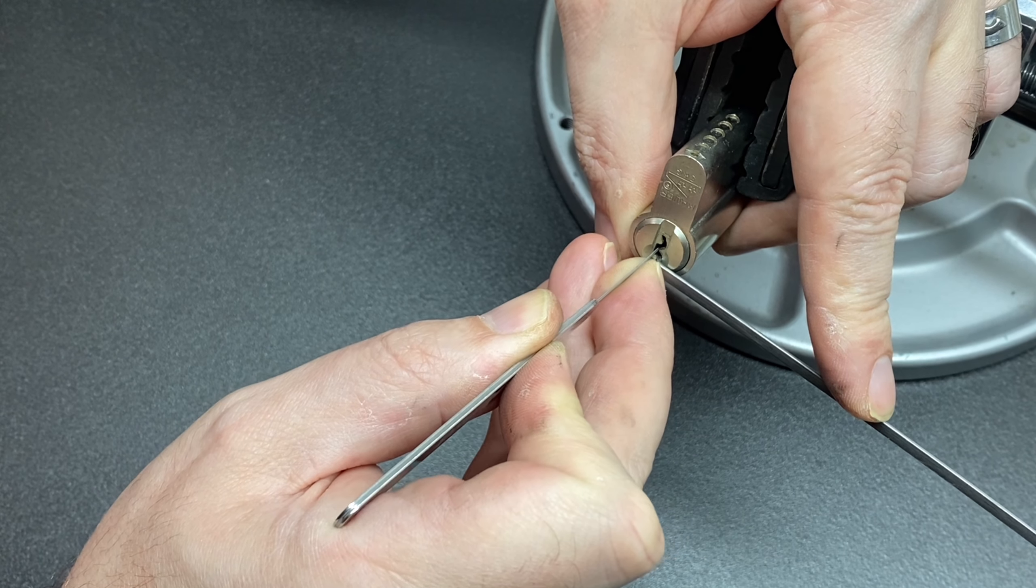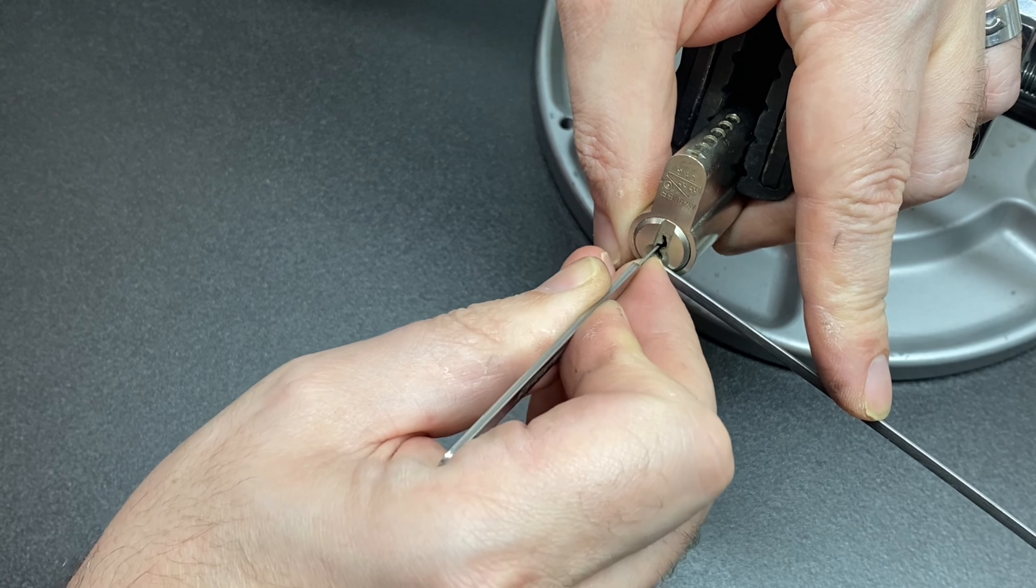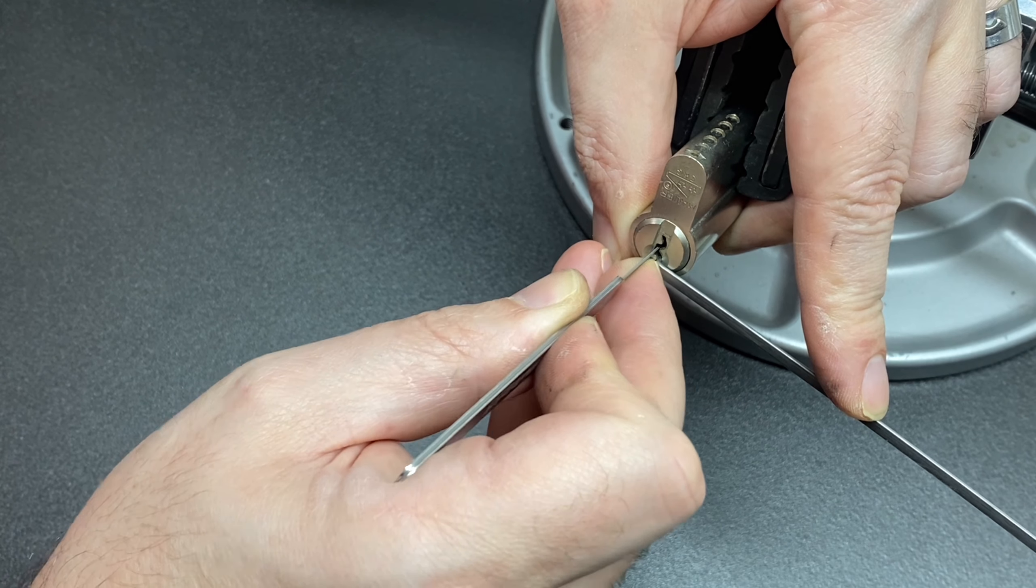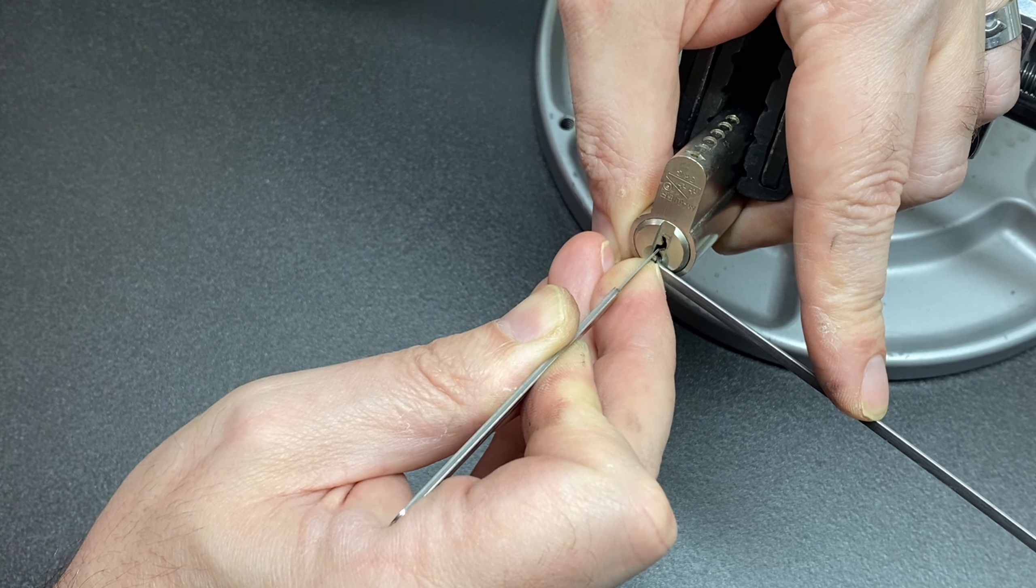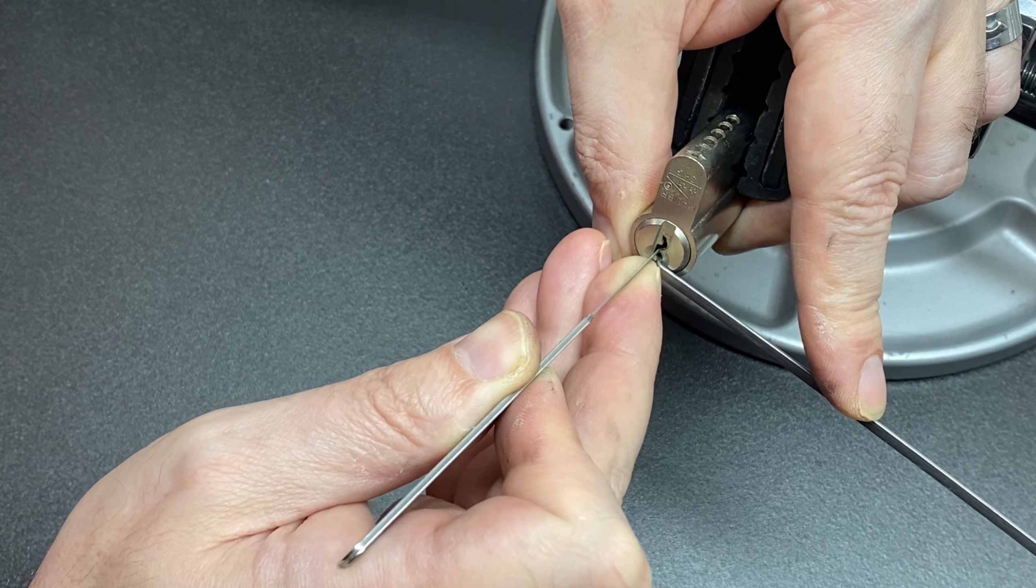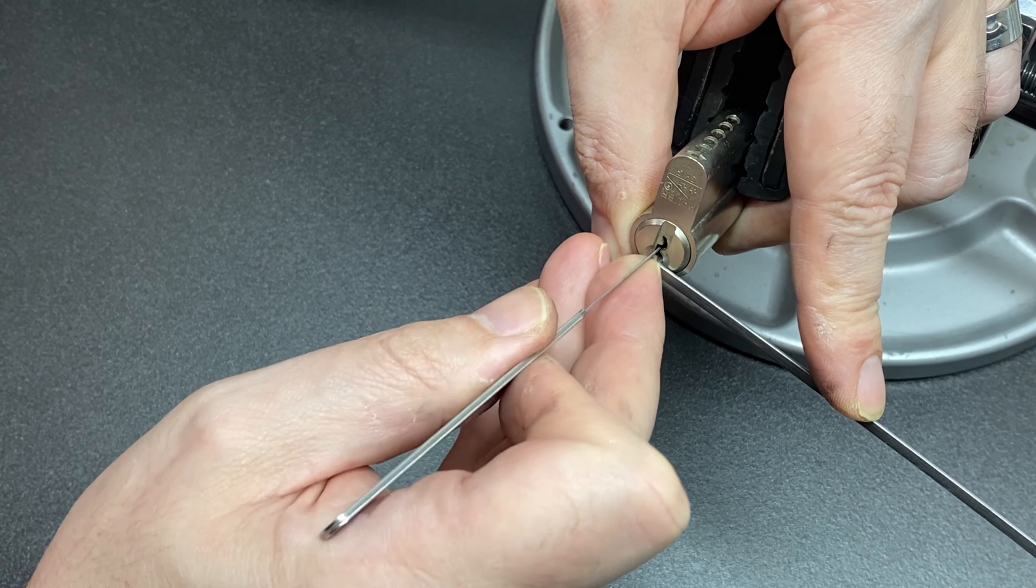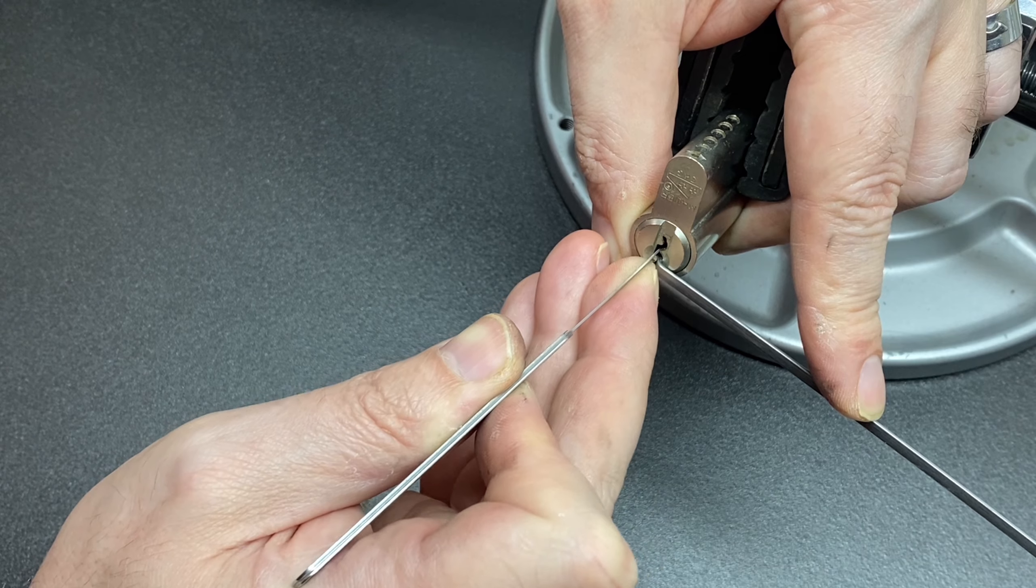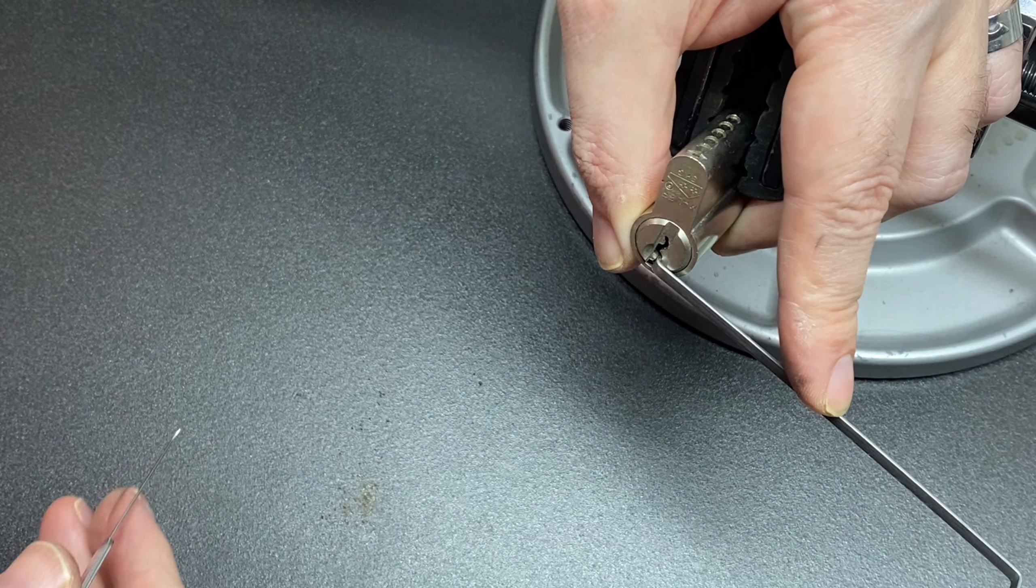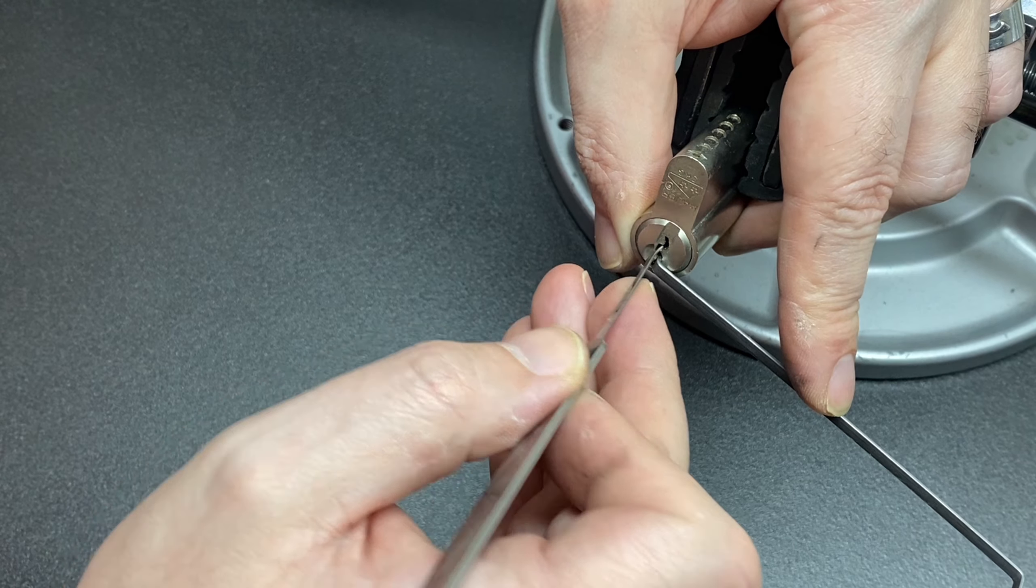So already pin 3 little click, pin 5 little tiny click off pin 5, nothing on 4, 3 there, two tiny click, one's binding now. Lift that up and we went into quite a false set there.